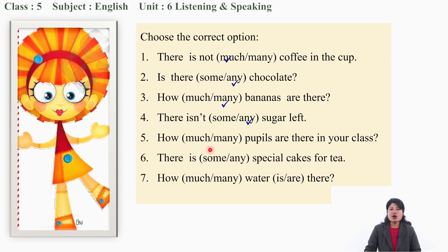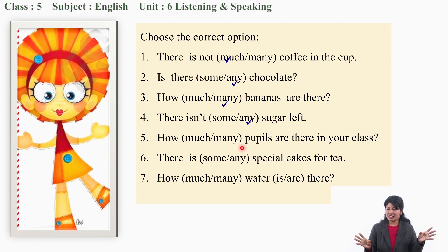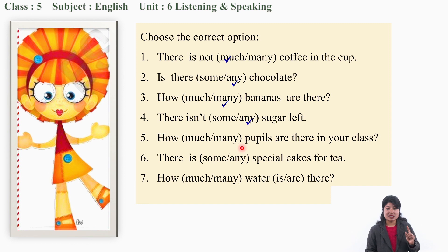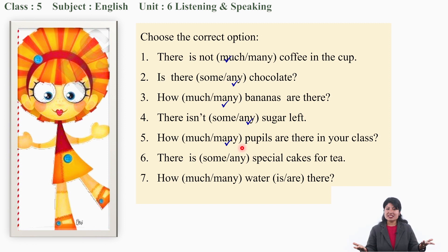Number five: 'How much/many pupils are there in your class?' Pupils means students. So do we say 'how much students are there in your class'? The right answer is 'how many.' We say: 'How many pupils are there in your class?' We use 'how many students,' 'how many pupils.'